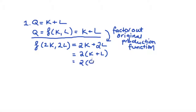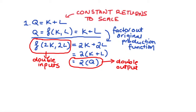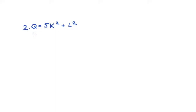You can see that I've doubled all my inputs and got back exactly double my original output. This behavior of the production function is called constant returns to scale. So let's have a look at our second example.